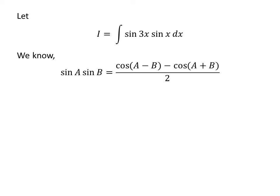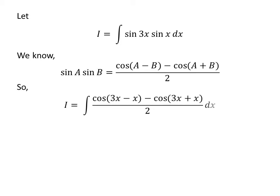We know the trigonometry identity: sine of a times sine of b is equal to cosine of (a minus b) minus cosine of (a plus b), upon 2. The video appearing in the upper right corner explains the proof of this trigonometry identity, and the link has also been given in the description section. I have replaced sine of 3x times sine of x in the integral by its value as per this identity.